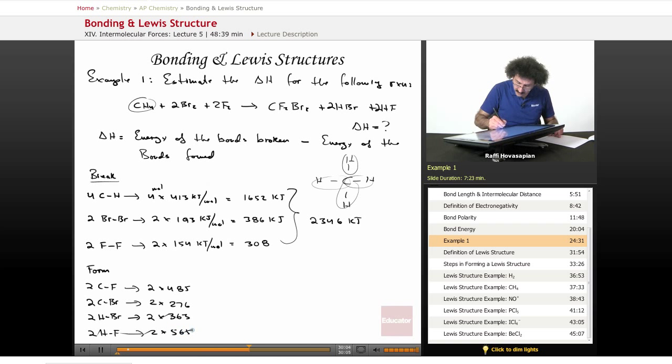Two times 565. And when I add all this up, I end up with 3,378 kilojoules. When I take 2,346 minus 3,378, I get a delta H of negative 1,032 kilojoules.